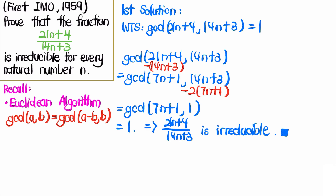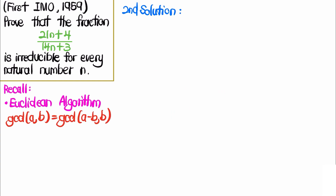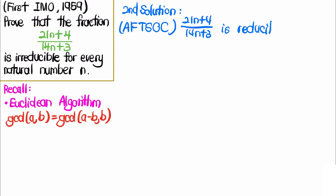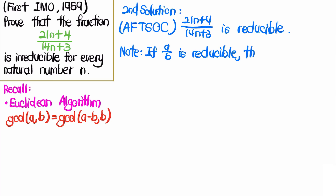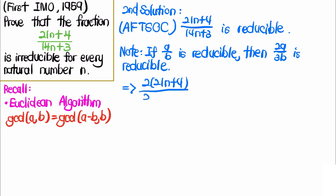Now let's look at the second solution. For this solution, we use proof by contradiction, assuming for the sake of contradiction that the fraction is reducible. We note that if a fraction a/b is reducible, then (2a)/(3b) is also reducible, since 2 and 3 are coprime integers. So this implies that 2(21n + 4) / 3(14n + 3) is also reducible.